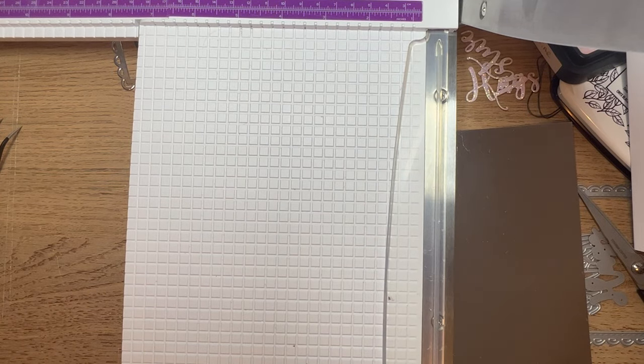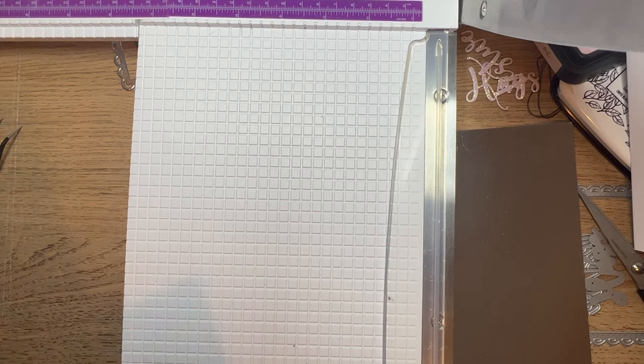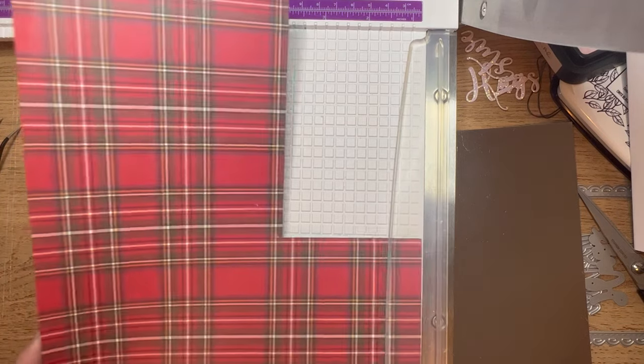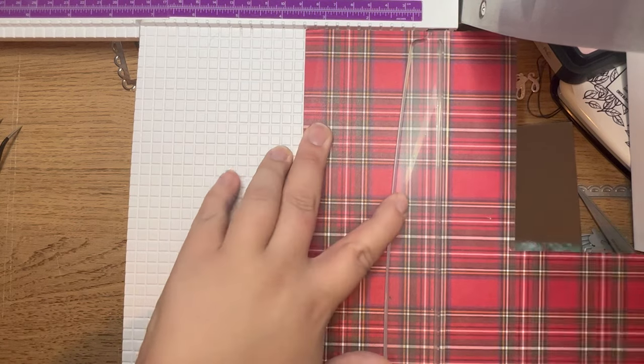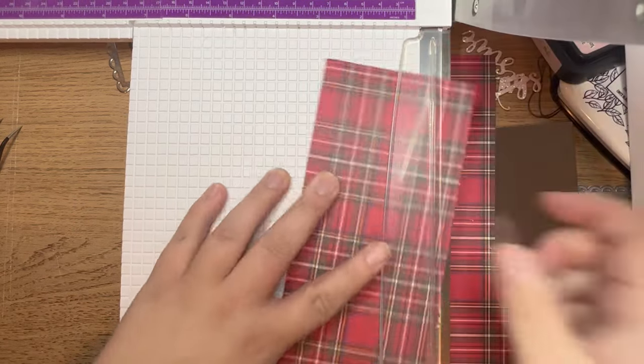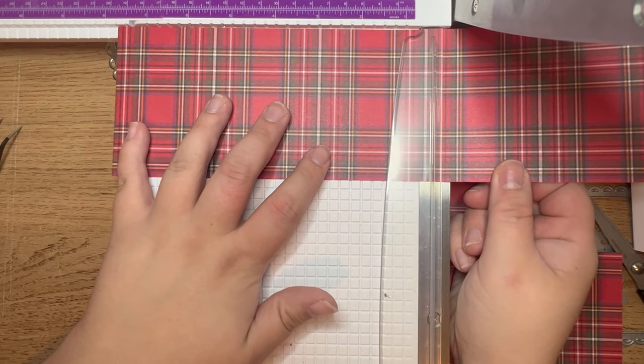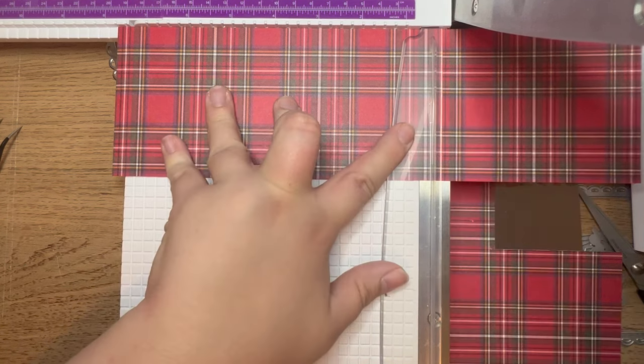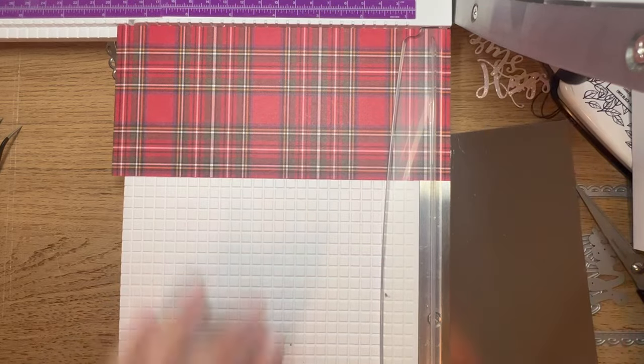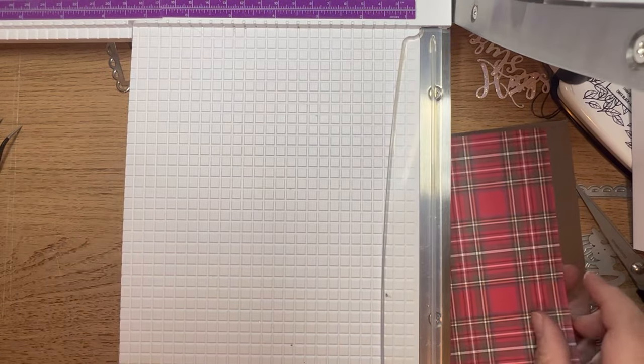That is my mirror card ready to go. Then I'm going to bring in my red tartan. I'll cut this at three and a half by roughly seven and three quarters. That now gives me my layers.